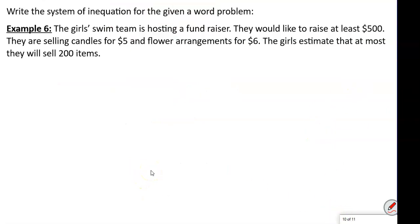Now we write systems of inequalities. The girls swim team is hosting a fundraiser. They'd like to raise at least $500. They're selling candles for $5 and flower arrangements for $6. They estimated they'll sell at most 200 items. So candles plus flower arrangements is less than or equal to 200.